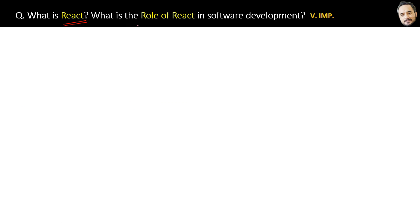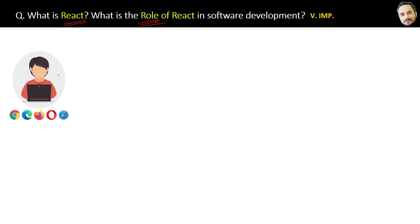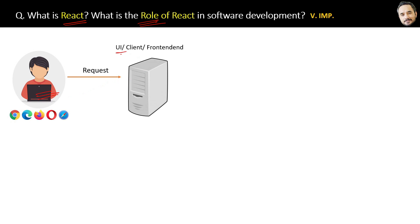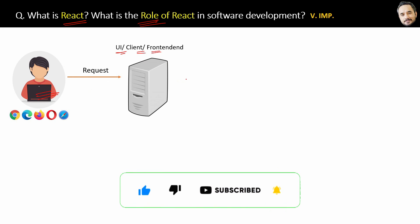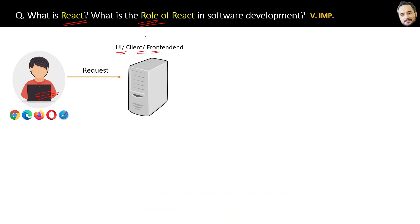What is React and what is the role of React in software development? For example, you are a user and you open an e-commerce website on your laptop. When you open the website, first the request will hit the UI server. This UI server is also called the client or front-end server. This front-end server will have all the static HTML content.